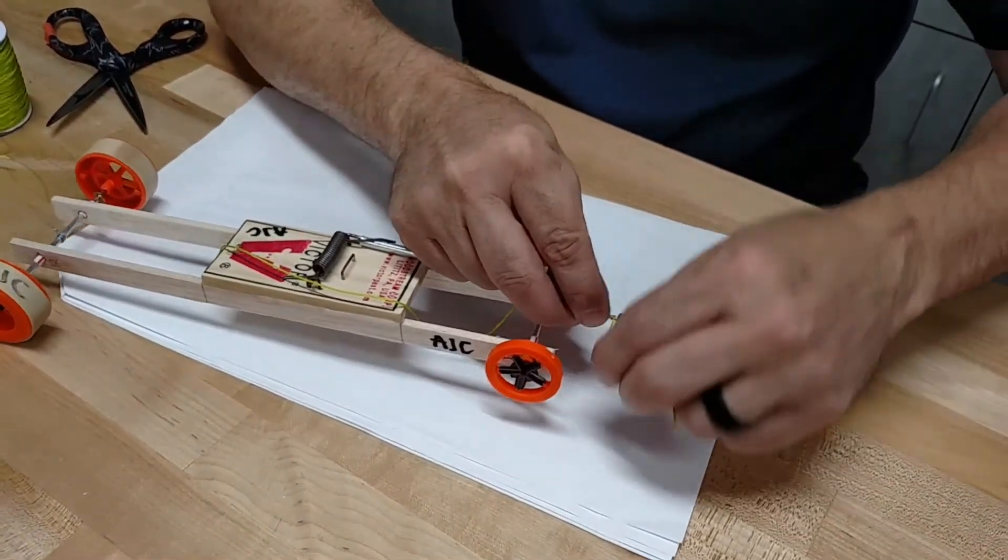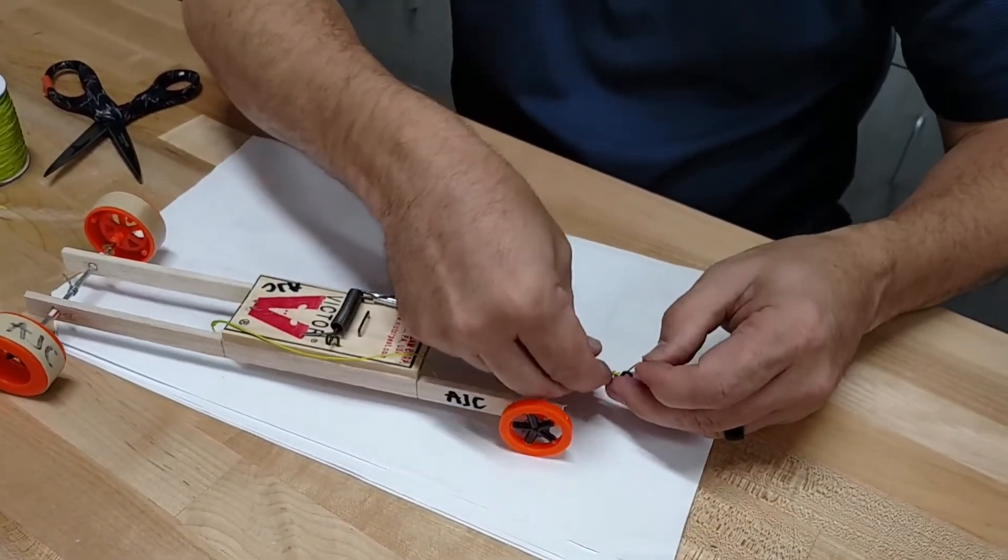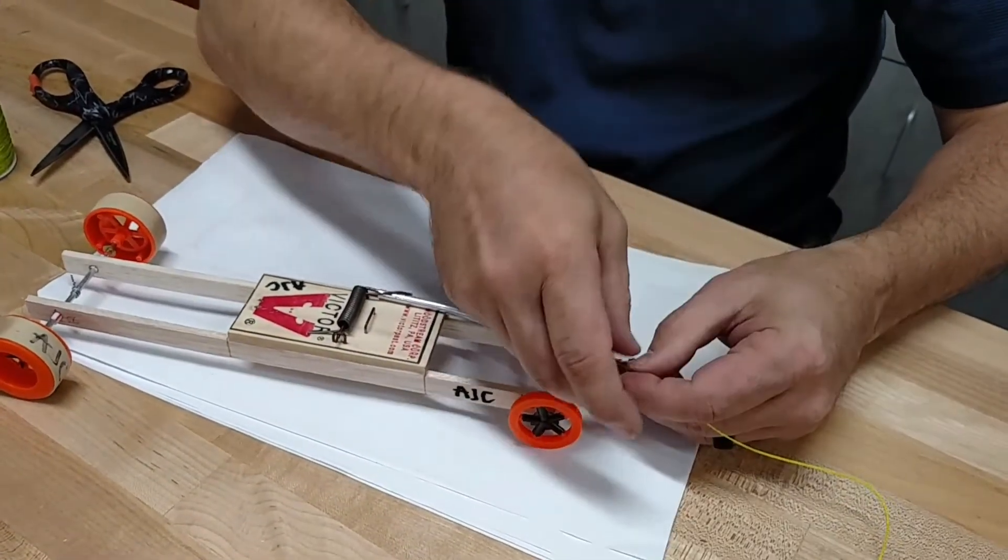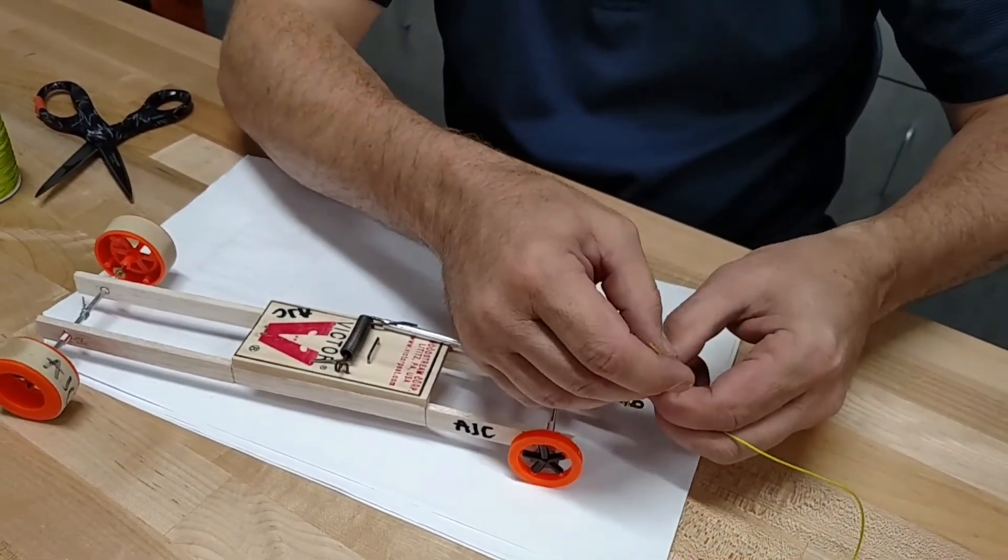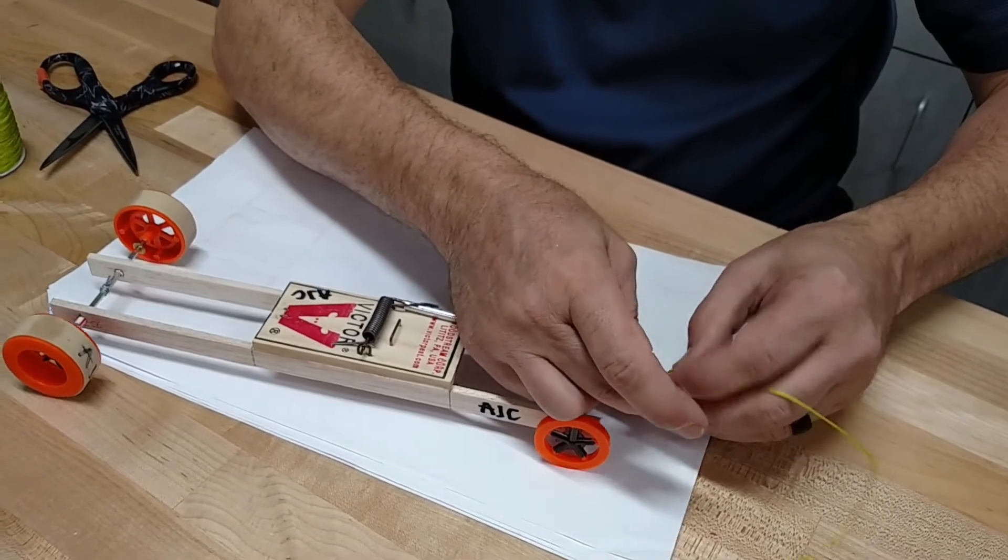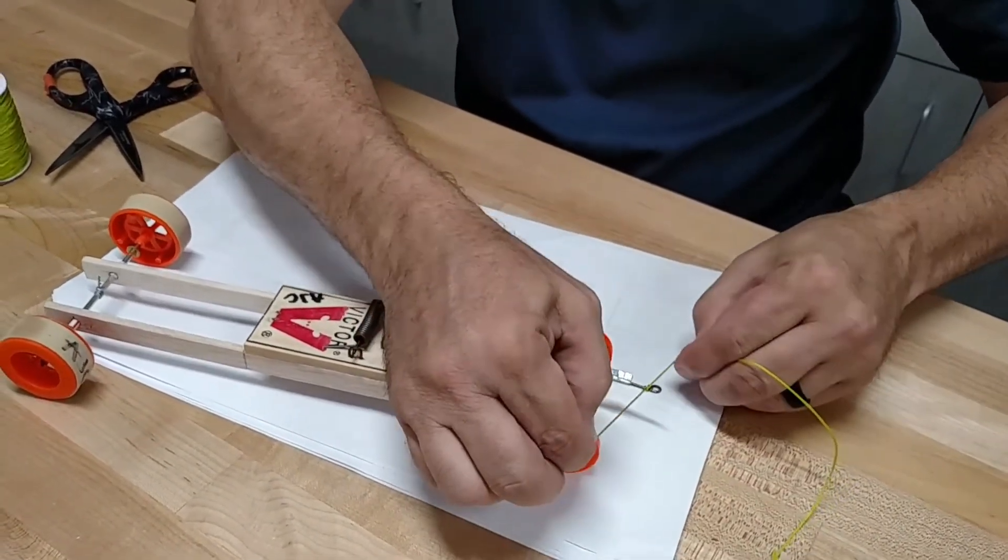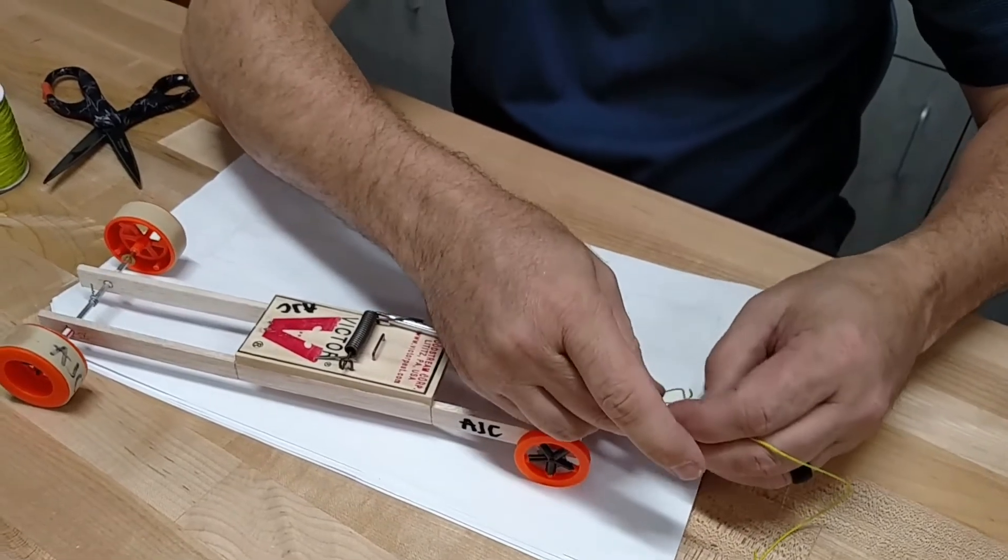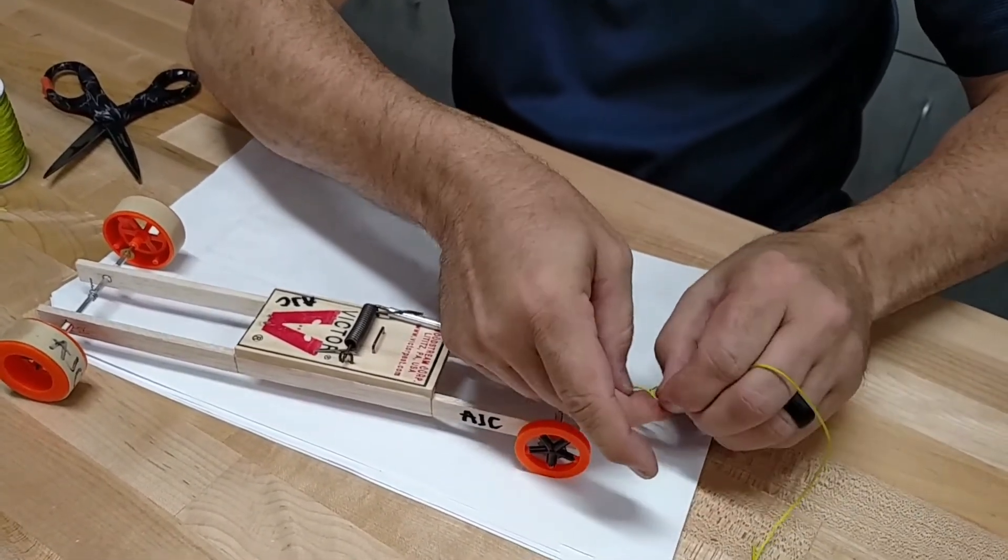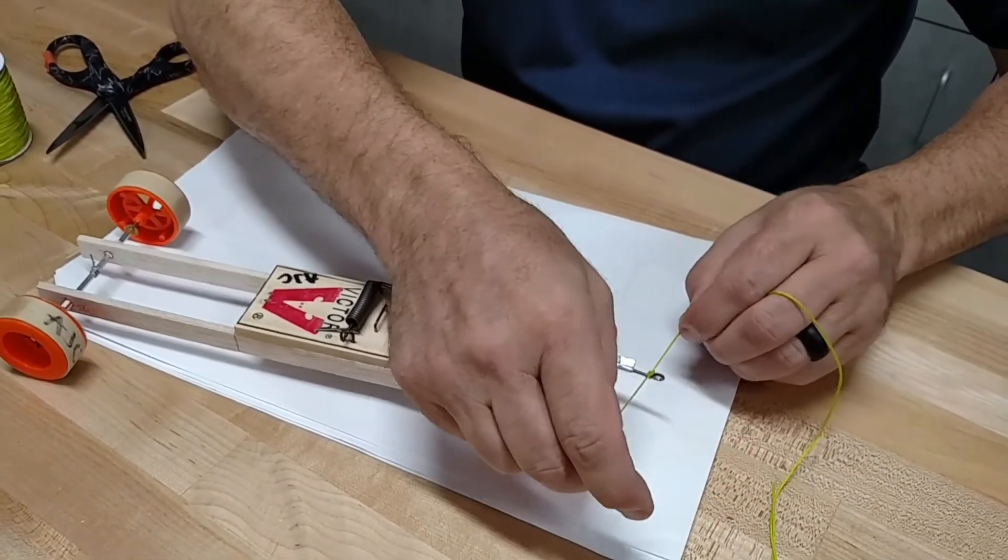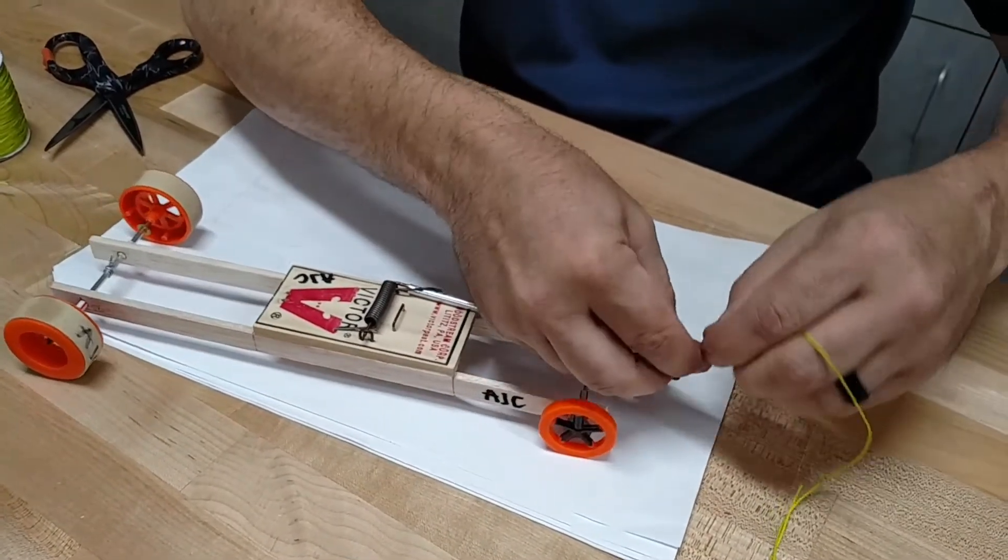And then I just wrap it around a couple of times like this so the length stays right. And then I'll tie a knot. A couple of knots like this, maybe two or three so it won't come undone. We'll do three for good measure.